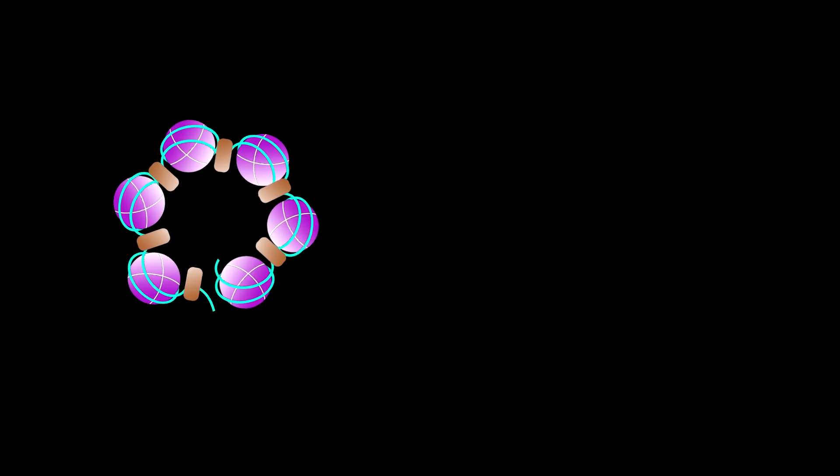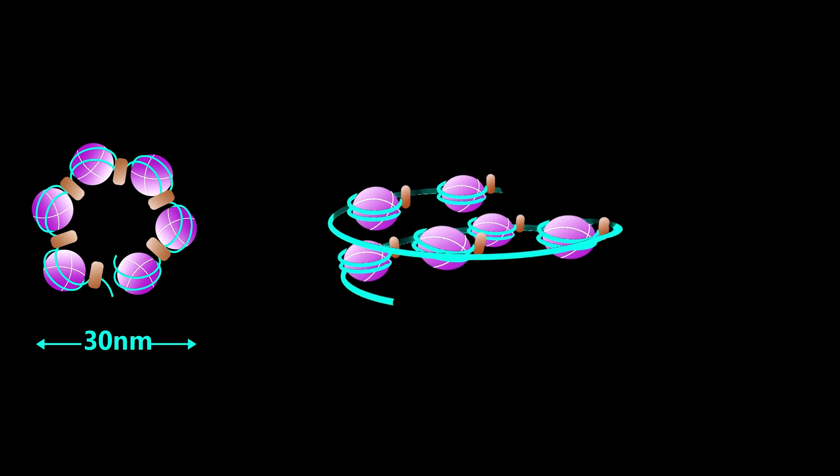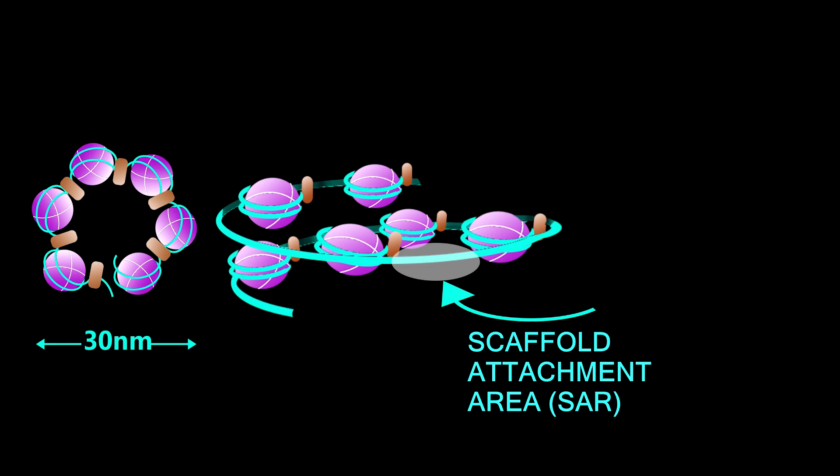Six nucleosomes are joined together and make a solenoid of 30 nanometer diameter. In this solenoid, there is some scaffold attachment area, or SAR area.